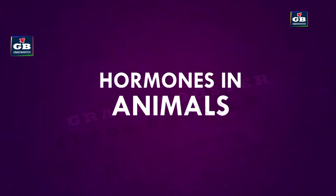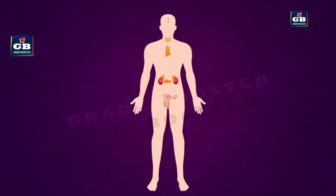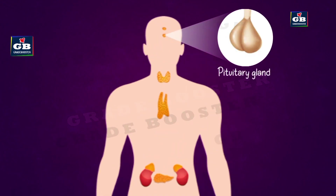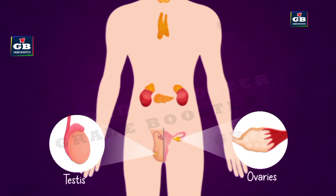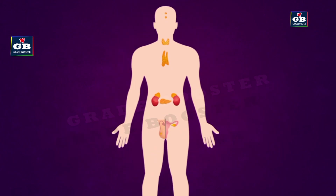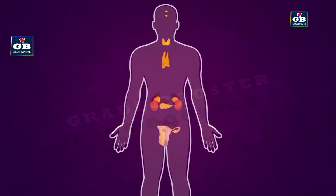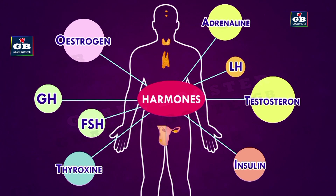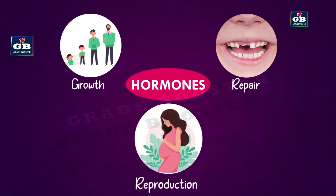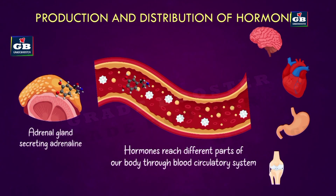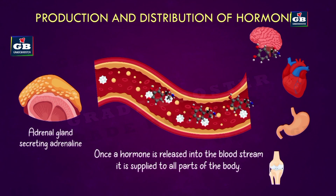Hormonal control in animals. Animals have a hormonal system called the endocrine system, which they use for control and coordination. Hormones are chemical messengers made by endocrine glands — they control growth, repair and reproduction. Hormones are released into the blood and reach all parts of the body, but only target organs respond to them.